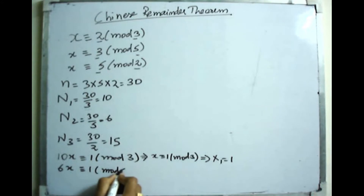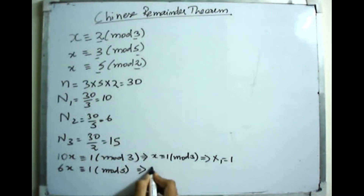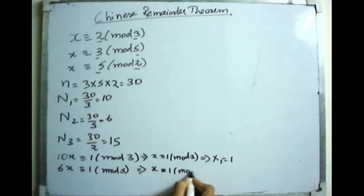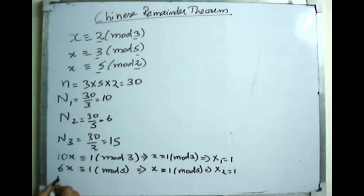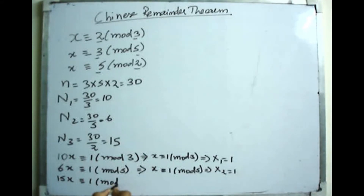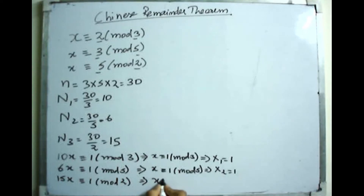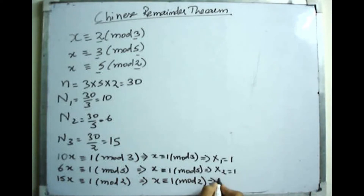For the second congruence: 6x ≡ 1 mod 5. Since 6 mod 5 = 1, this reduces to x ≡ 1 mod 5, so x2 = 1. For the third: 15x ≡ 1 mod 2. Since 15 mod 2 = 1, this reduces to x ≡ 1 mod 2, and the solution is x3 = 1.